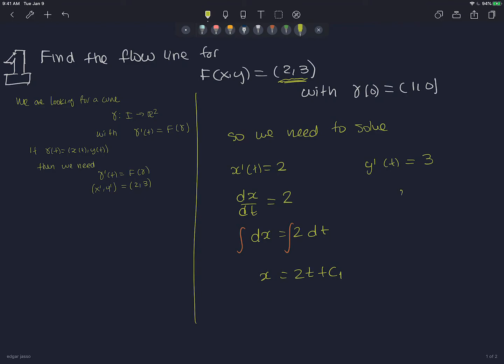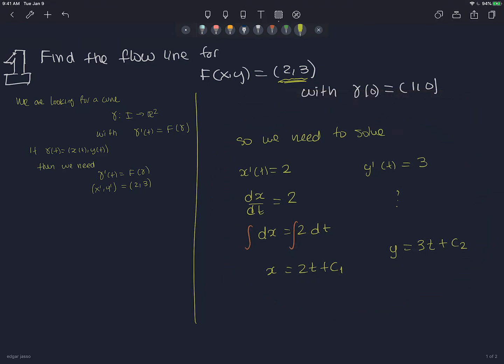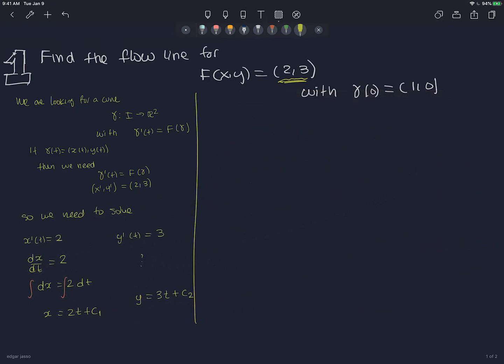If I do the same thing on this side, I'll get y = 3t + c₂. So I got that. I'm almost done. The only thing that is missing is I need to find the constants.